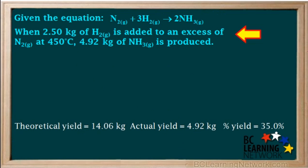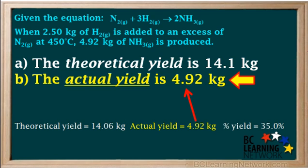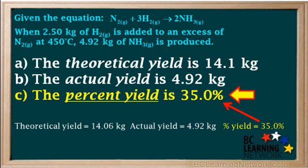We can now summarize the whole question by stating that when 2.5 kilograms of hydrogen is added to an excess of nitrogen and 4.92 kilograms of ammonia is produced, the theoretical yield of ammonia is 14.06 kilograms. But since this is our final answer, we'll express it to three significant figures to be consistent with the given data — so 14.1 kilograms. The actual yield of ammonia is 4.92 kilograms, and the percent yield of ammonia is 35.0%.